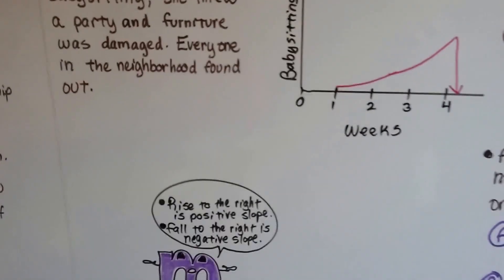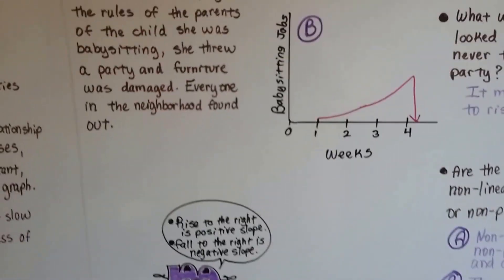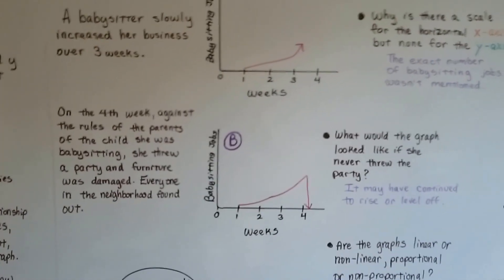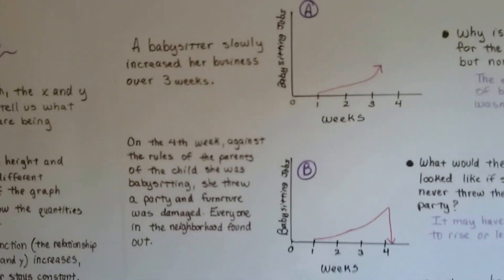And we can use that negative or positive number to help us draw the graph for the situation, couldn't we? Because we would know whether the line is going to go up or down.